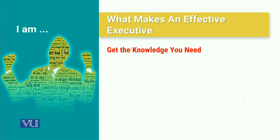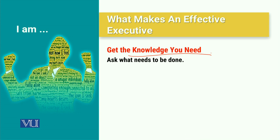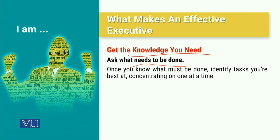When we talk about becoming an effective executive, the first thing is that we should have the knowledge of what needs to be done. You have to ask what needs to be done, what are the requirements of the stakeholders, and what are the things we need to focus upon. Once you know what must be done, identify tasks you are best at and concentrate on one at a time, because multi-tasking is not something which is very appreciable. You should be able to set the hierarchy of priority, and that hierarchy should be executed as per planned.